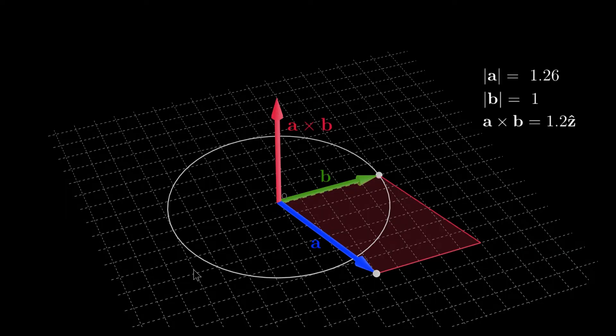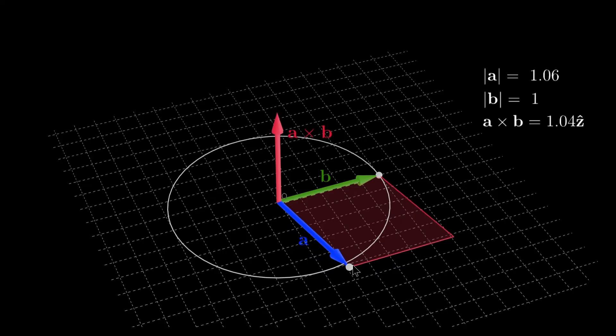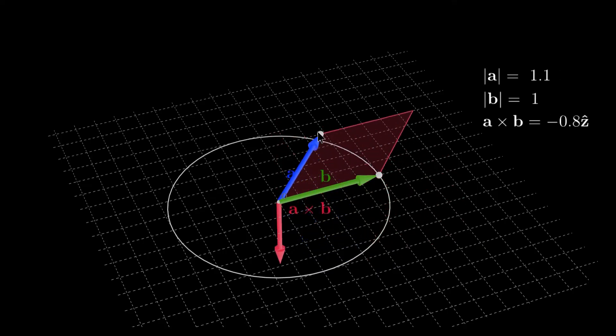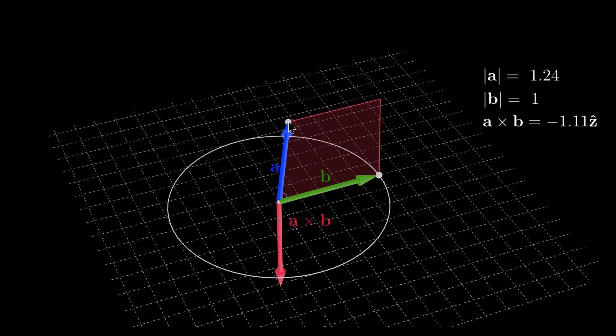If your right-hand fingers move from vector a to vector b, then your right thumb finger points in the direction of a cross b. Moving vector a to the other side of b reverses the direction of the cross product according to the right-hand rule. This, by the way, is the reason that a cross b is not equal to b cross a, because they have exactly an opposite sign.